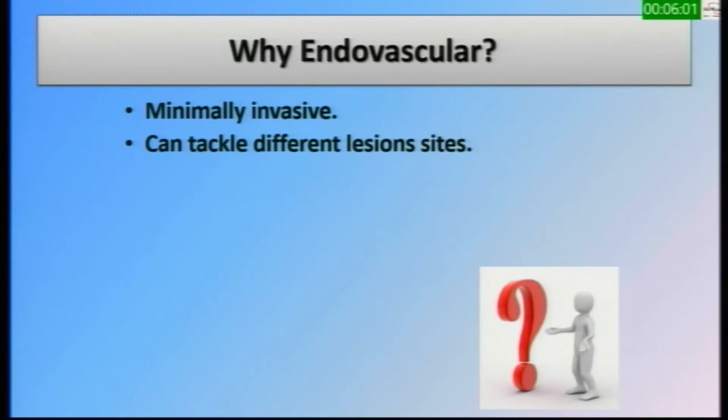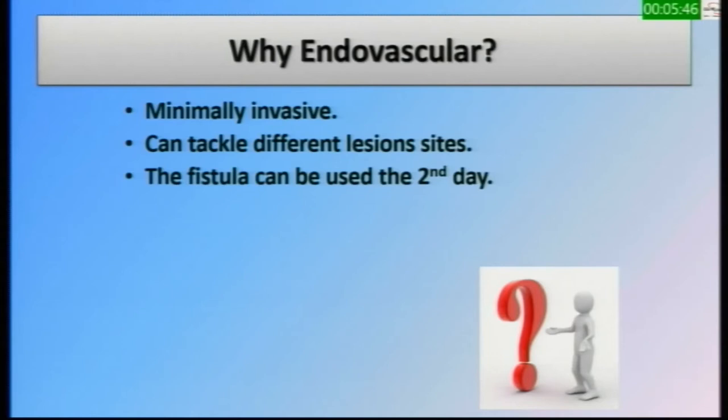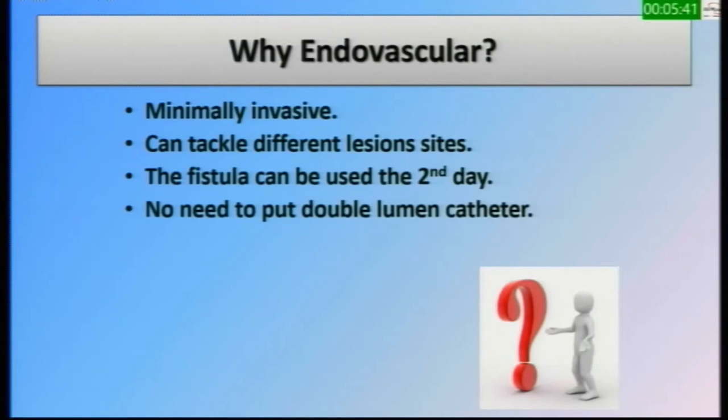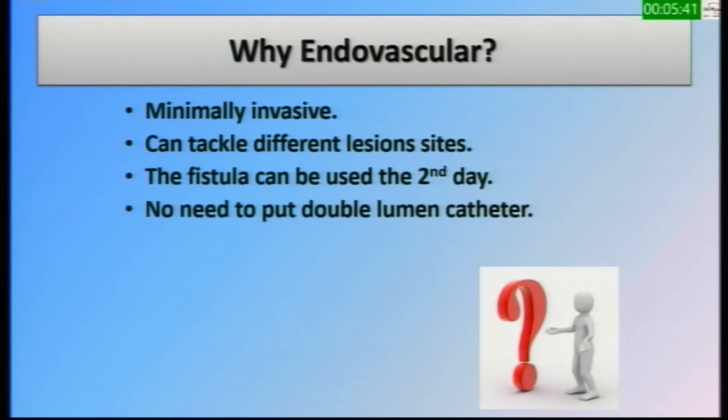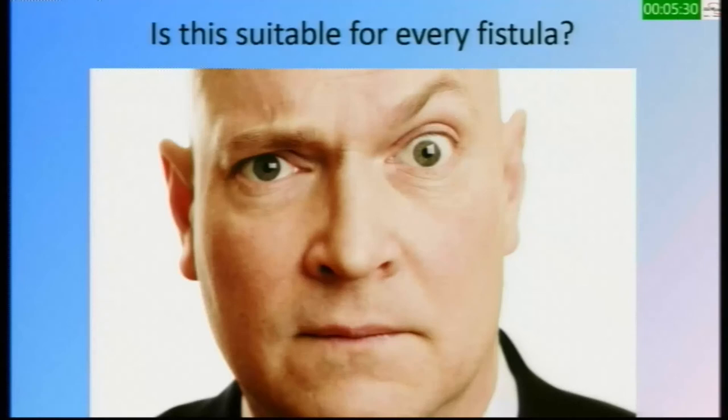Endovascular technique can tackle different lesions — not only on the venous side but also on the arterial side, at the anastomosis, in the veins, and even in the central veins. If we have a central venous lesion, that entire limb is out of use for AV access. The fistula can be used the very next day after endovascular salvage, so we don't need to place a double-lumen catheter. It also has a very good patency rate, and if re-occlusion occurs, the procedure can be repeated.